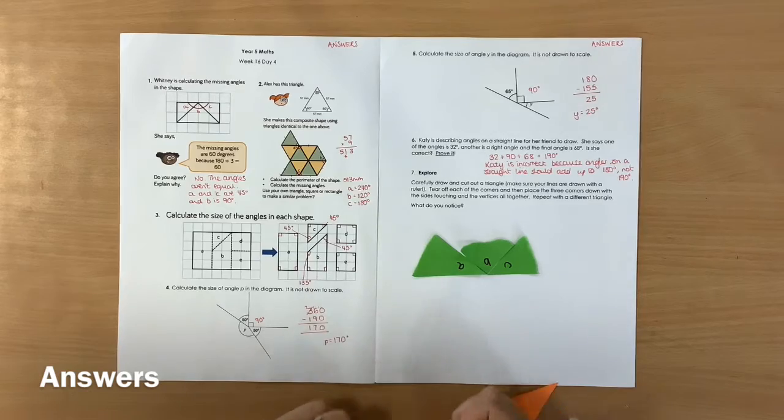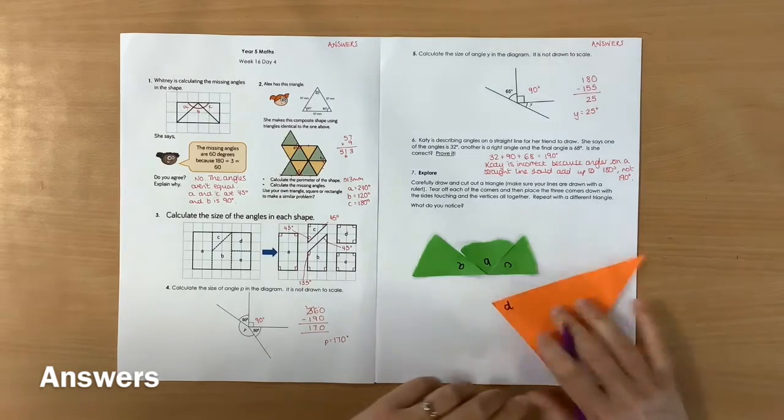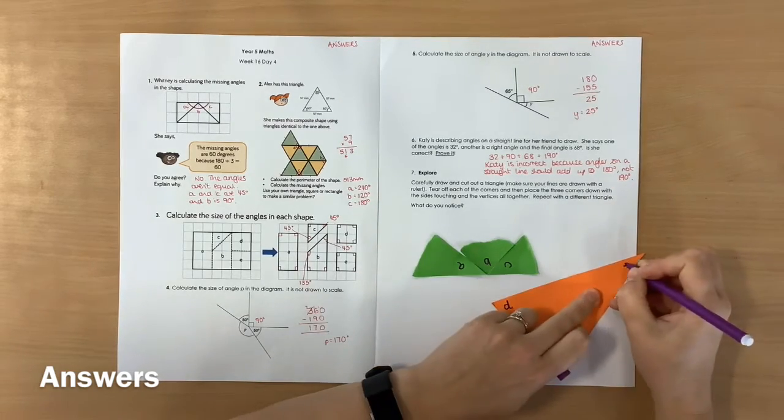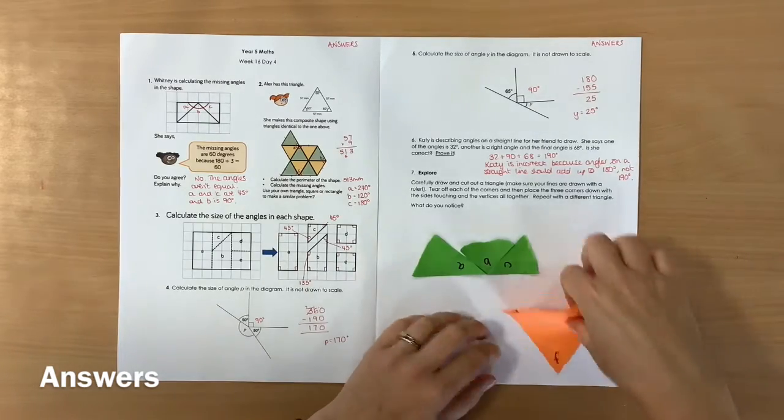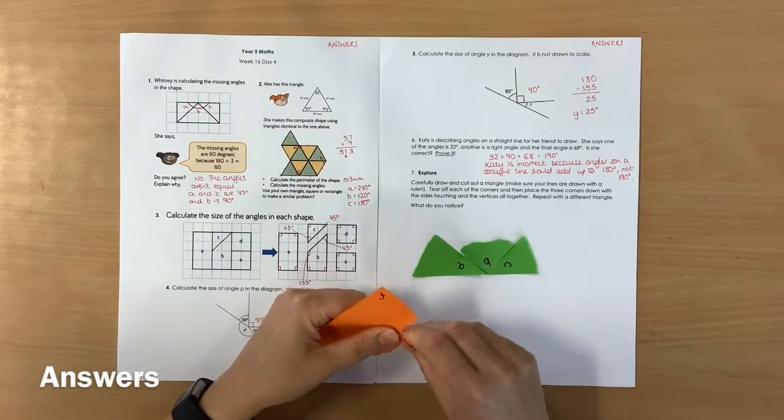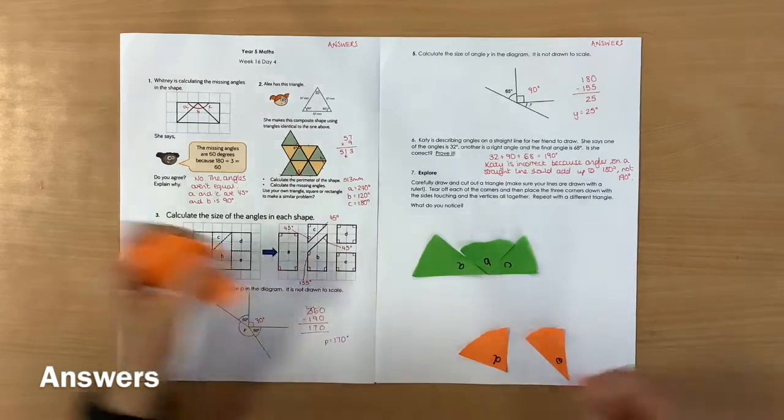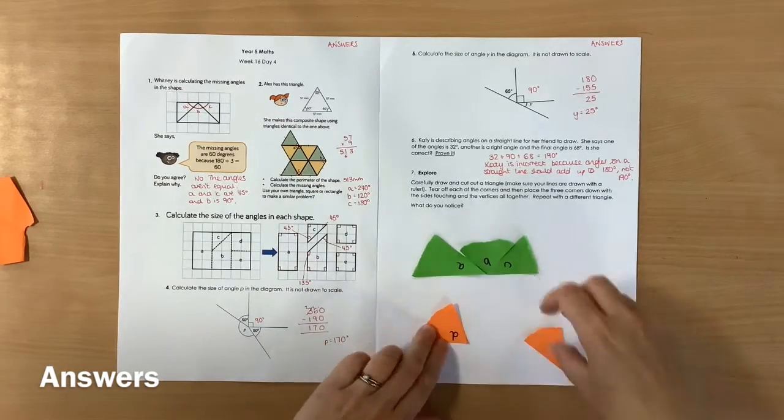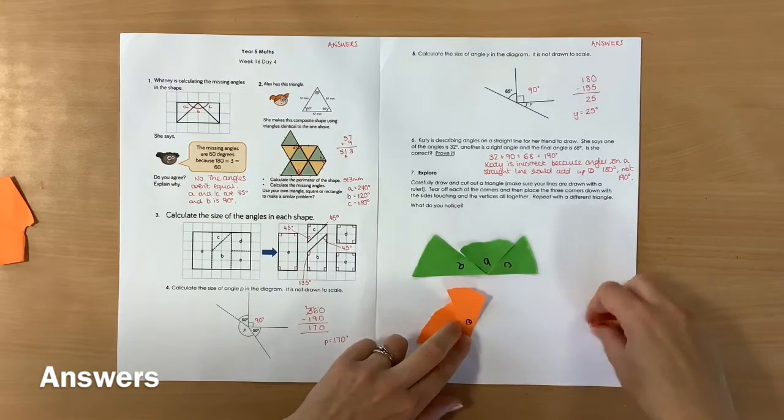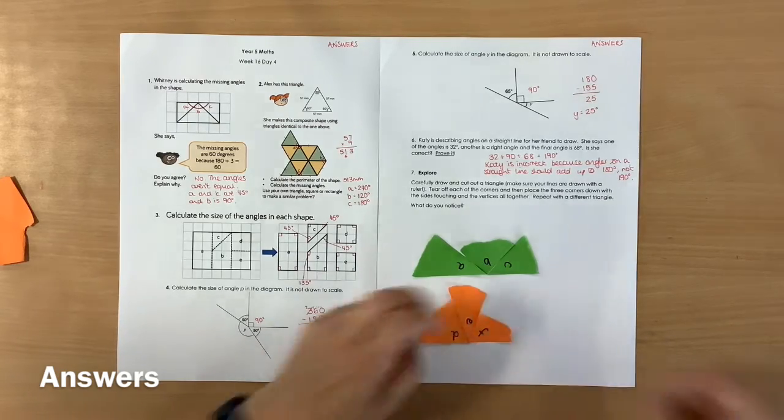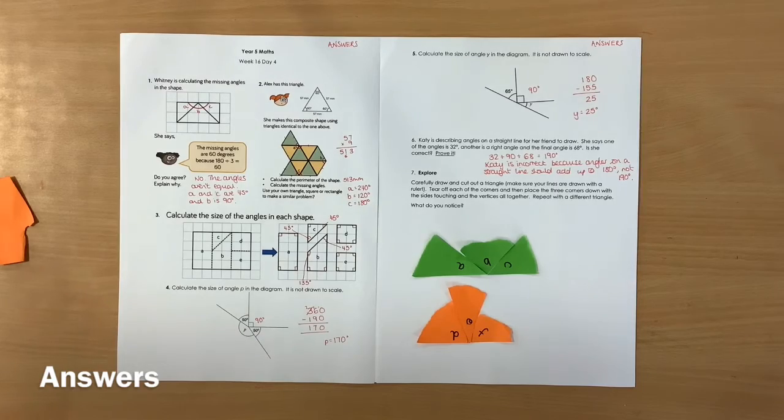I'm going to do an orange one now, so I'm going to call these D, E and F. I'm going to do the same thing, carefully tear off the corners and then I'm going to put them together with their sides touching and their vertices. There you go, just to prove that it does work with another one.